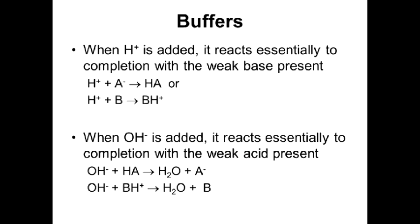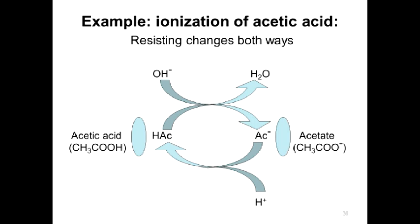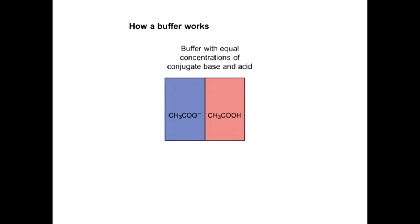When hydrogen ions are added to a buffer solution, the acid component will react with them; and if OH⁻ ions are added, the base from the conjugate pair will react. Using acetic acid as an example: if OH⁻ ions are added, CH₃COOH reacts to form acetate ions; and if H⁺ ions are added, acetate ions form acetic acid molecules. This diagram shows how the buffer solution works.